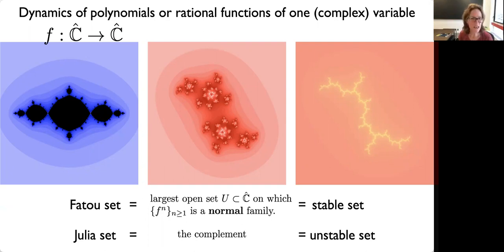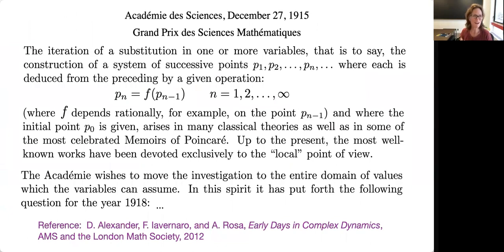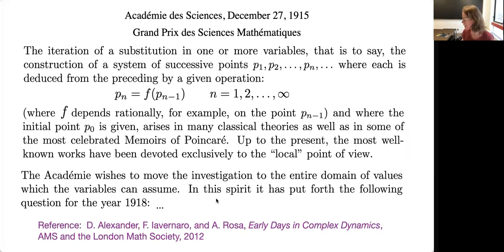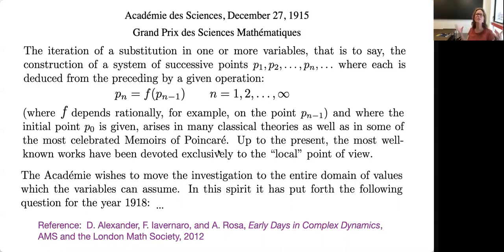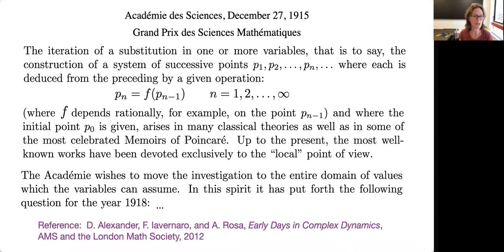I want to go back in time and tell you where this came from. This text is the English translation of a prize announcement, announced in 1915, with submissions closing in 1918. The researchers were asked to investigate the iteration of maps. Dynamics had essentially existed for roughly 15 or 20 years, with the work of Poincaré initiating dynamical systems from a geometric and qualitative point of view around 1900.